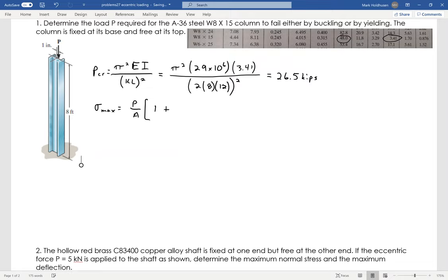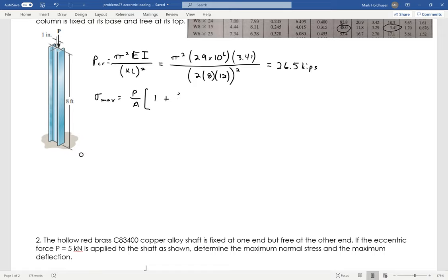Where it's the force over the area times 1 plus the eccentricity times C, which is the distance from the neutral axis, over R squared, which is the radius of gyration, times the secant of KL over 2R times the square root of P over EA.